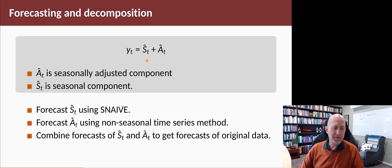We're going to forecast S using a seasonal naive method. That makes good sense because the seasonal component doesn't change much over time, and so the forecasts for the next year should be pretty similar to what we've seen this year. And then the seasonally adjusted component, we can use any non-seasonal time series method for that.